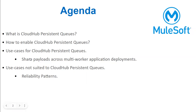Now let's talk about when we can use it. First, this is a specific feature — don't confuse it with traditional VMQs, it is a little different. It is designed solely to enable the capability to share payloads across multi-worker application deployments. It should only be used for this purpose. This will improve HA resiliency and performance due to load distribution and caching capabilities. So if your application is deployed on multiple workers, this option is very useful.